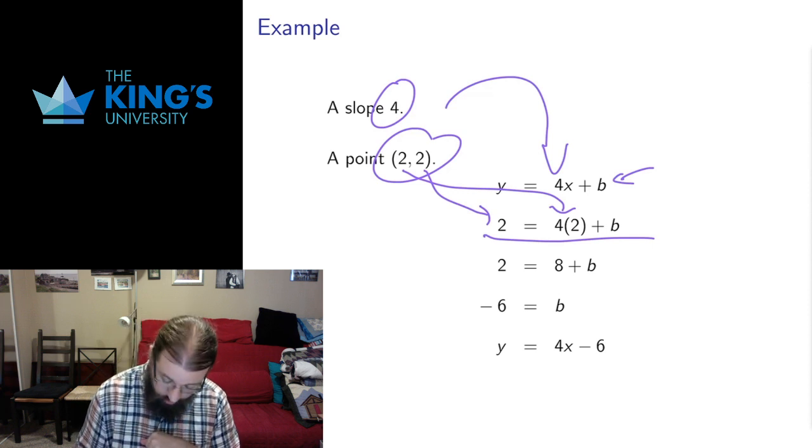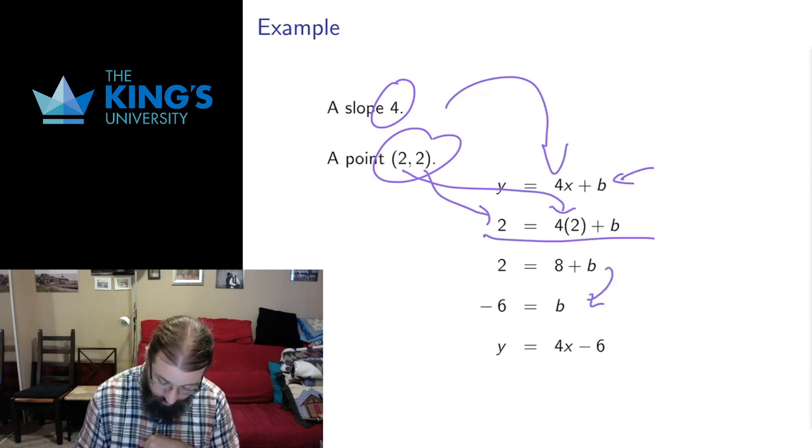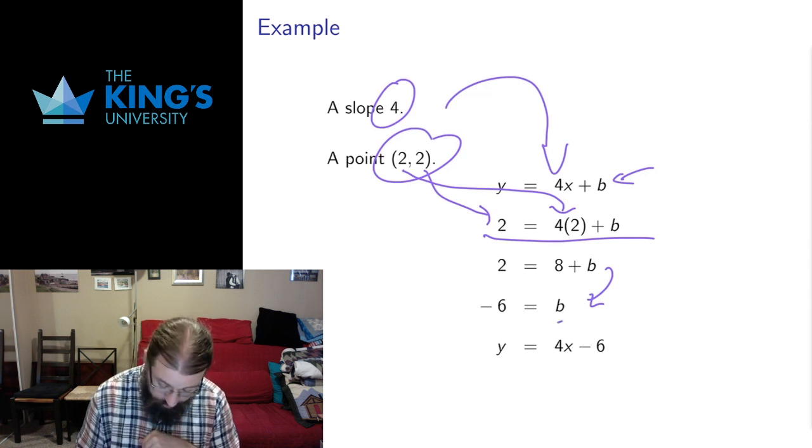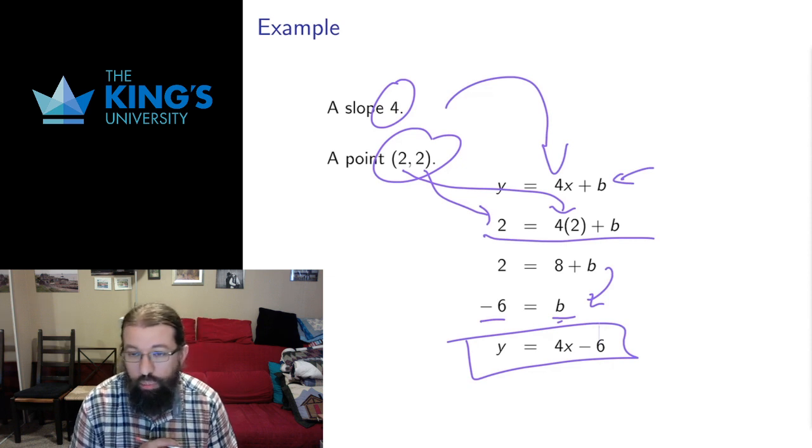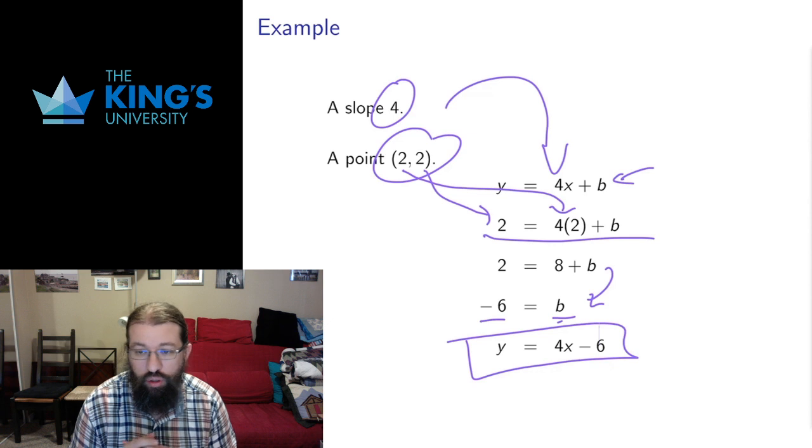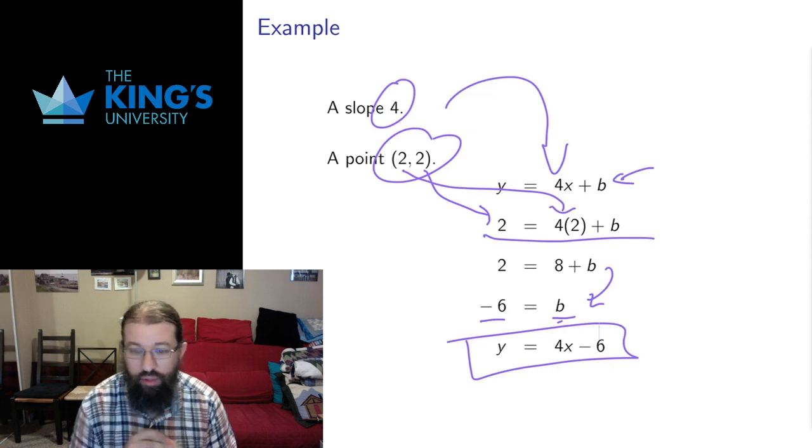4 times 2 is 8, we can subtract 8 from both sides of the equation, and we can solve to see that b should be negative 6. Then we can just replace b with negative 6 and get the equation of the line. So the slope part is the same; we use the point to determine what the intercept should be, which gives us the equation of the line.